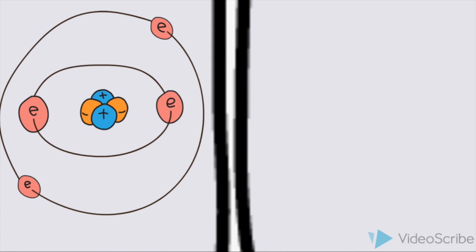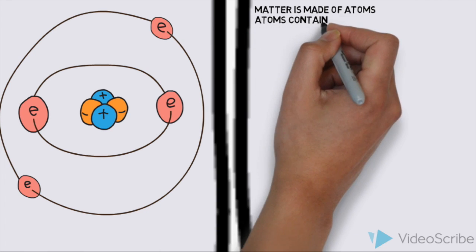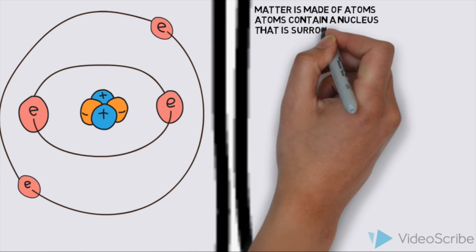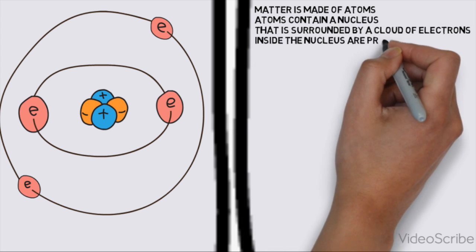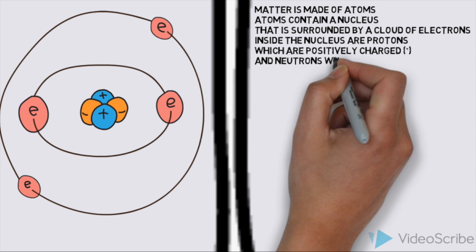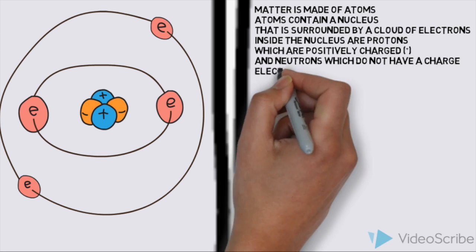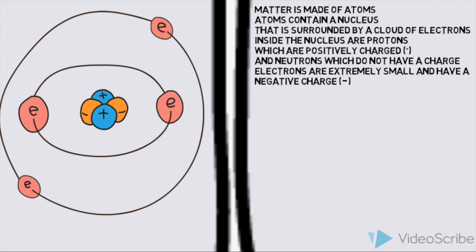Let's observe what happens on the atomic level. Matter, or stuff, is made out of tiny particles called atoms. Atoms contain a nucleus which is in the center surrounded by a cloud of electrons. Inside the nucleus are protons and neutrons. Protons are positively charged and neutrons do not have a charge. Electrons are extremely small and have a negative charge on them.